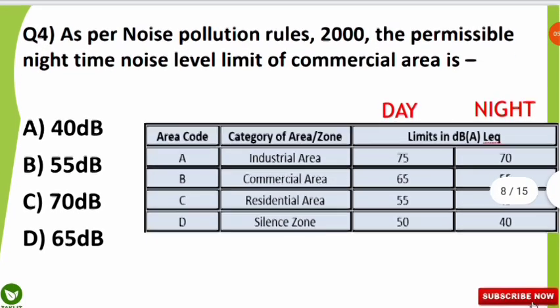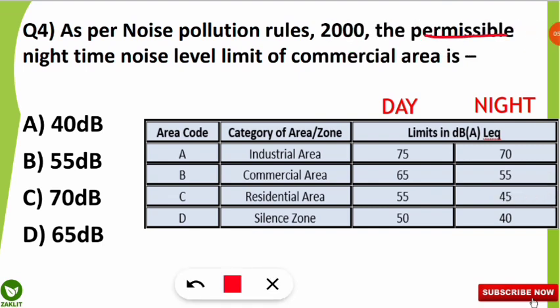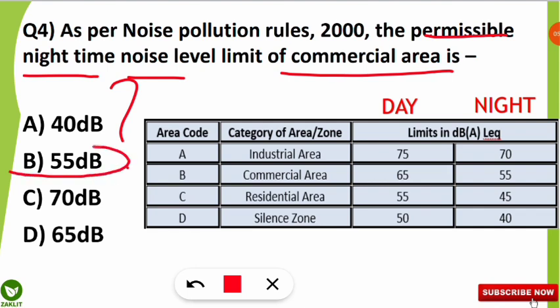The next question is from the Noise Pollution and Control Rules of 2000. The question was: as per noise pollution rules, what is the permissible nighttime noise level limit for a commercial area? The table is on your screen. The answer is option B — 55 decibels. This table is very important for examination purposes. Four area categories are defined: industrial area, commercial area, residential area, and silence zone. During daytime, the industrial area maximum is 75 decibels.